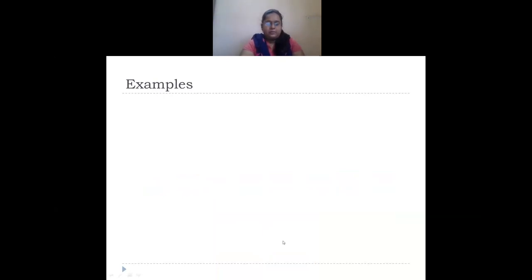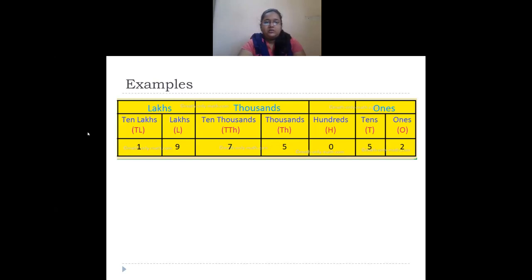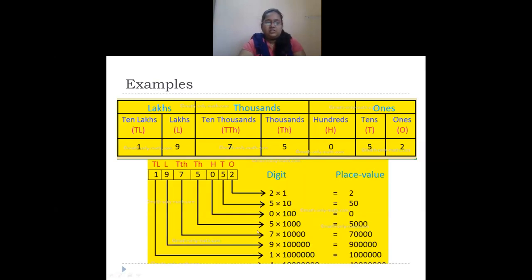Let's see one example on place value and face value. Take the number 19,75,052. The place value of two in ones place is two into one, which is two. Five in tens place: five into ten is fifty. Zero in hundreds place: zero into hundred is zero. Five in thousands place: five into thousand is five thousand. Seven in ten thousands place: seven into ten thousand is seventy thousand. Nine in lakhs place: nine into one lakh is nine lakhs.